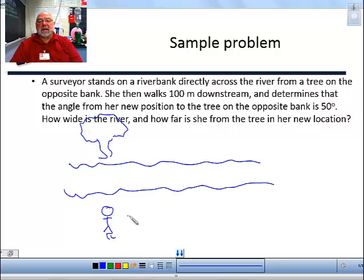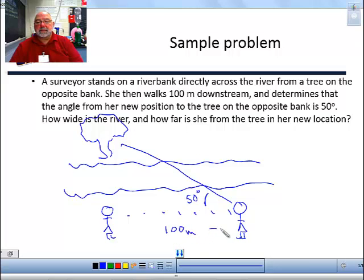And then she walks downstream 100 meters, looks back at the tree and sees that the tree makes an angle. The direction to the tree makes an angle of 50 degrees with the river bank. And this distance is 100 meters. And I want to know how wide the river is. I want to know this length.